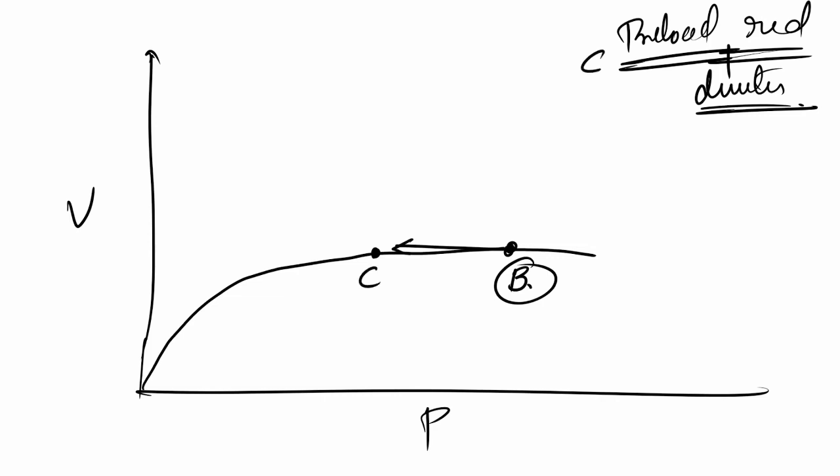This is called point C. Now you might be thinking, why point B, where is point A? Point A is here. This is where your heart would be in case of a normal curve. But since we are taking the abnormal conditions, we have point B and point C. So B is the point of heart failure, C is the point where I reduce the preload by giving diuretics.